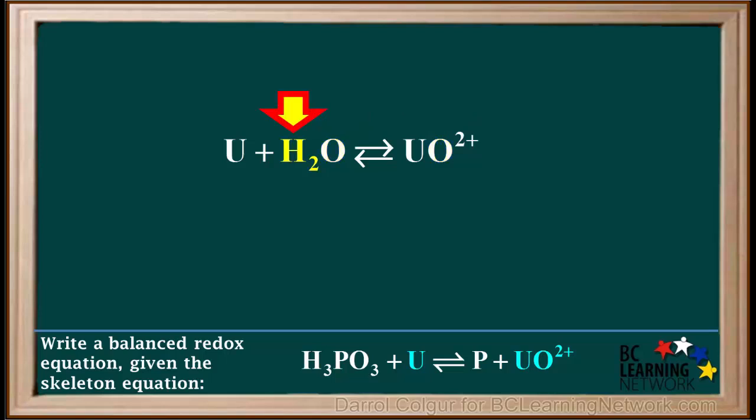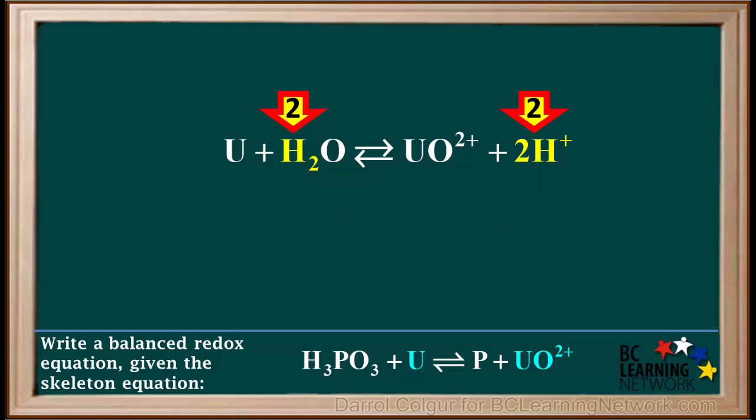At this point, we'll balance hydrogen atoms. We have two H atoms on the left and none on the right. To balance H's, we add two H+ ions to the right. Now we have two H atoms on both sides, so hydrogen is balanced.